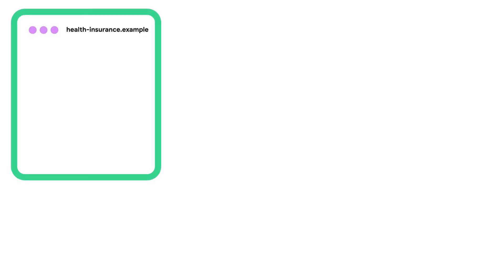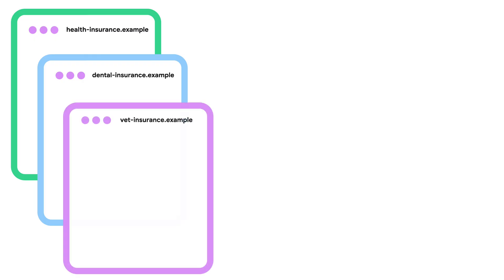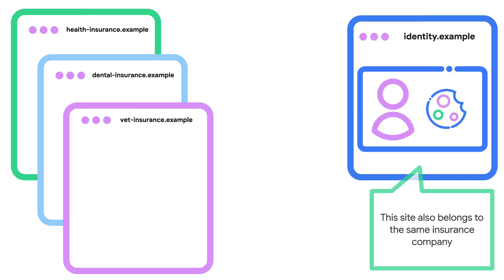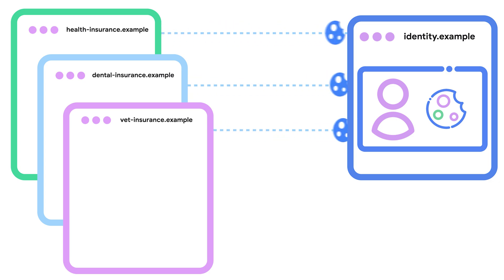Here is another example. Many solutions offer a convenient flow where users can access multiple services with a single account. For example, you might manage multiple services — health insurance, dental insurance, vet insurance — and they all rely on the same in-house solution, identity.example. This user journey is also known as single sign-on. If the user is logged into identity.example but third-party cookies are not available, the reliant sites won't be able to automatically authenticate the user.